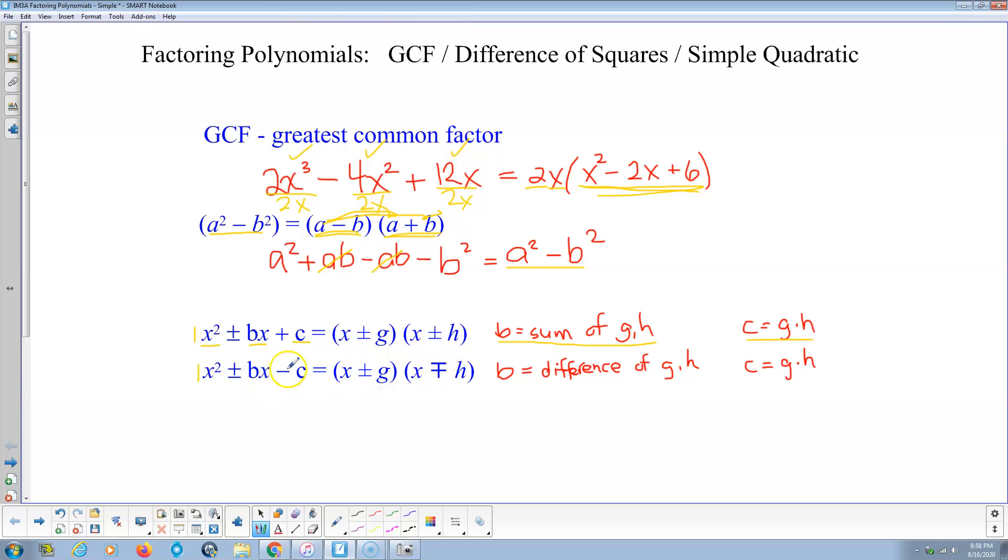What happens when C is negative? The only way to multiply two numbers and get a negative is if they're different signs. So the signs are different. The pattern is still the same - X times X is X squared. But B in the middle is the difference of G and H now, because positive G and negative H are going to partly cancel.